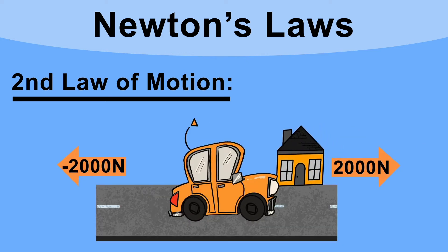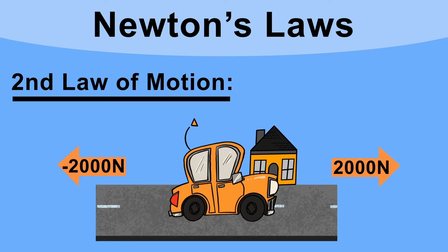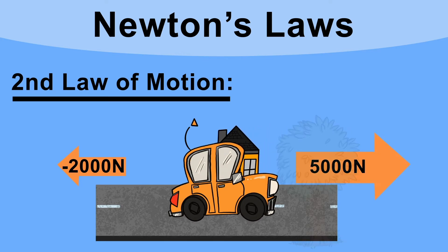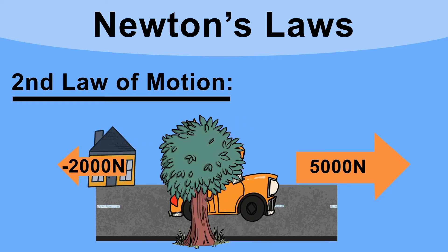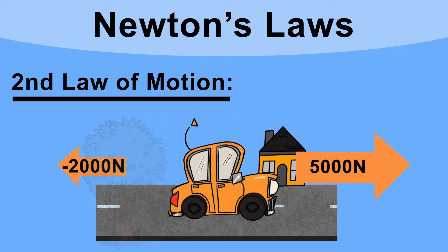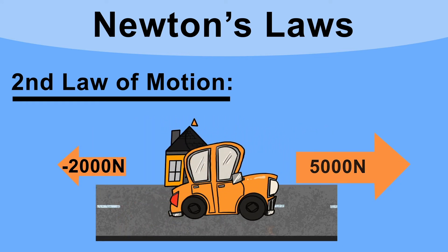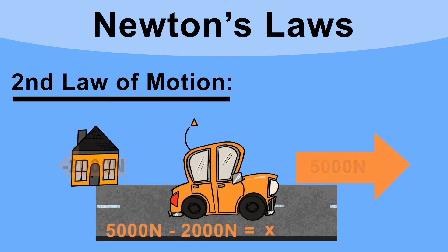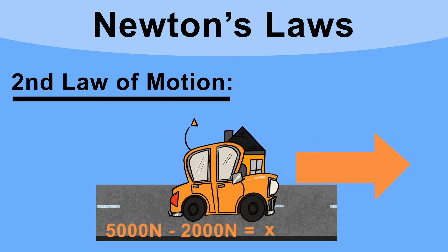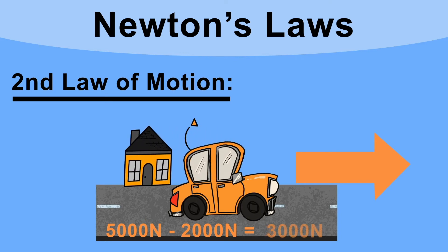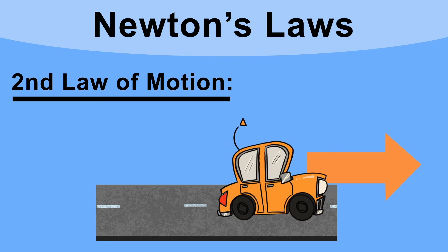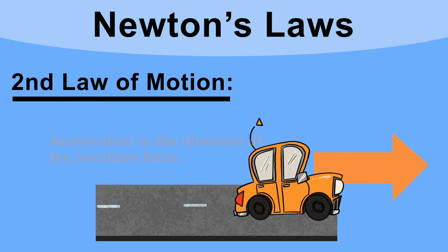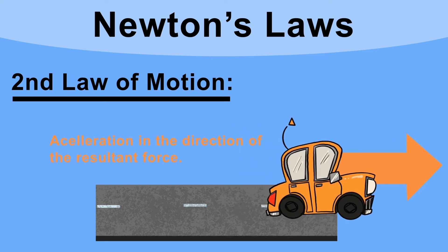What about the car? It's still moving at a constant 40 miles per hour, but the driver puts his foot on the accelerator and the thrust force increases to 5000 newtons, with drag staying the same at 2000 newtons. Now we have a resultant force of 5000 minus 2000, which equals 3000 newtons, and the car's speed starts to increase.